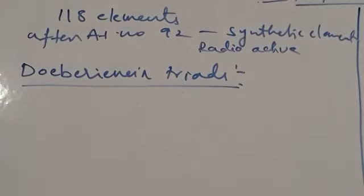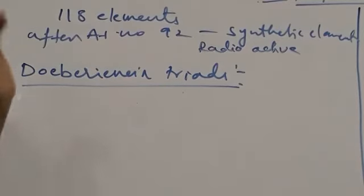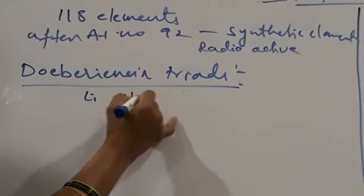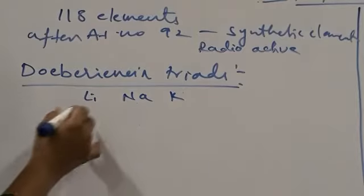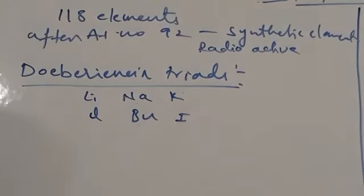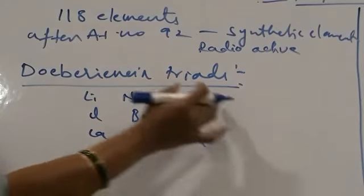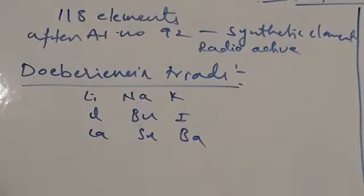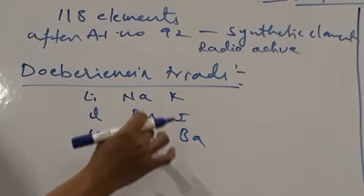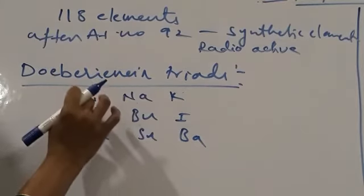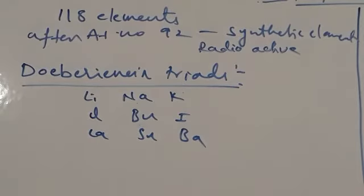Each triad has three elements, all arranged in the increasing order of their atomic weight. The triads are: lithium, sodium, potassium; chlorine, bromine, iodine; and calcium, strontium, barium. These triads are arranged in increasing order of atomic weight, and the atomic weight of the middle element is the average of the first and last elements. This is the very first classification, made by Dobereiner in the form of triads.